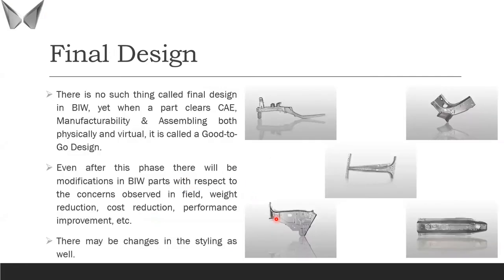Once all teams have cleared the design, it is released for production — though there is really no such thing as a truly 'final' design. After production begins, the team revisits the product for weight reduction, cost reduction, and performance improvements. Physical validation may reveal issues like noises from certain locations or areas that can't be spot welded, and these are addressed as running changes implemented during production itself.